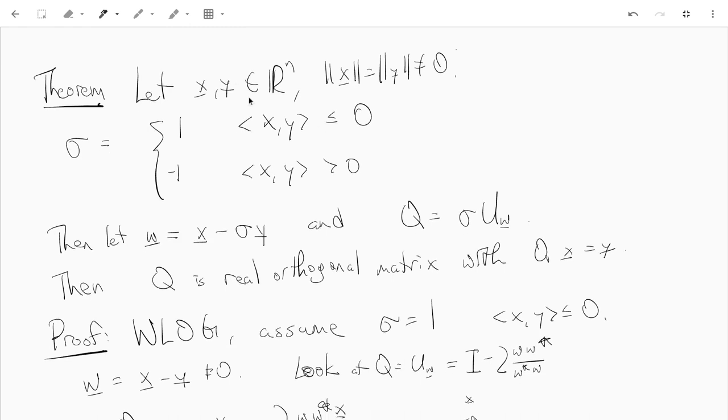It says if we have two vectors in R^n, x and y, and they both have the same length, then sigma is this kind of like either plus or minus one depending on the angle between x and y. If the inner product is less than or equal to zero, we take sigma to be one. If the inner product is greater than zero, then we take sigma to be negative one. And we let w to be x minus sigma y.